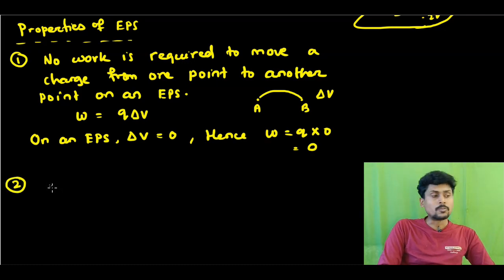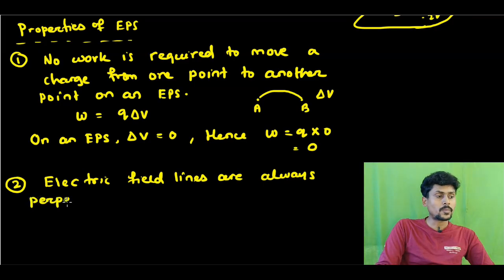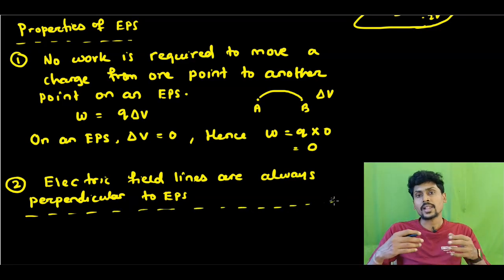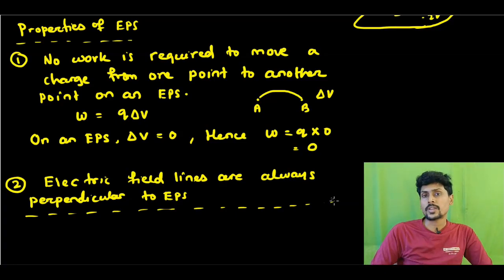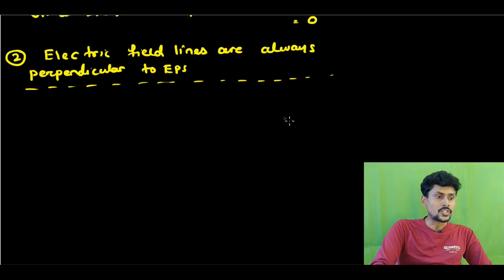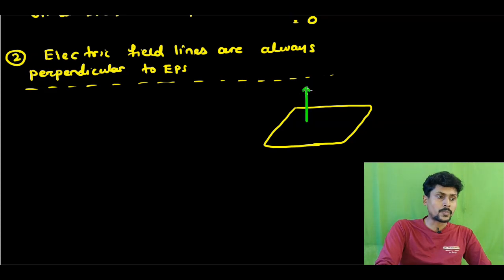What is the second property? Electric field lines are always perpendicular to an EPS. The second property states that the electric field lines — electric lines of force — are always perpendicular to the surface of an EPS.